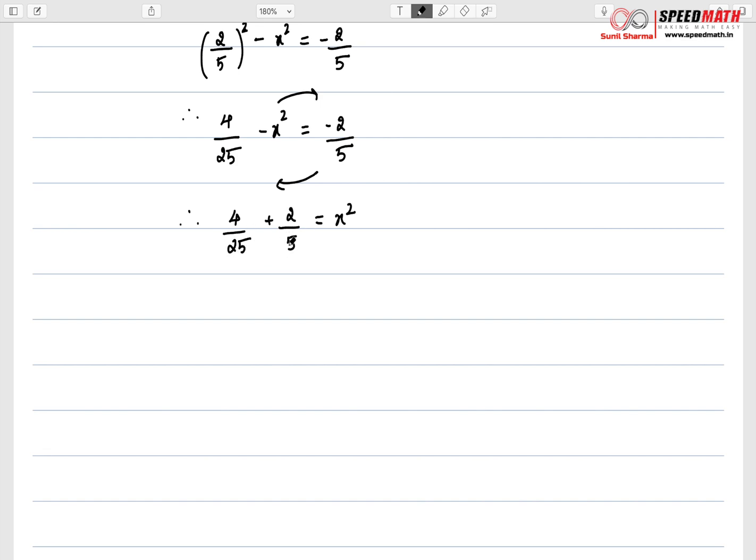Now we need to make the denominator same or we need to take the LCM. So how do I get 25 here? Simple, if I multiply by 5, then you'll have to multiply the numerator as well. So we get 4/25 + 10/25 = x². Now you can see the denominator is same. 14/25 = x².